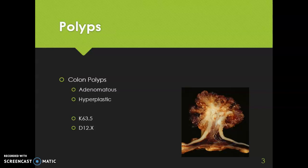Z87.19 is used for a personal history of a hyperplastic colon or rectal polyp, and Z86.01 is for a history of an adenoma or neoplastic polyp. Code Z86.010 is used for a history of an unspecified colon polyp.